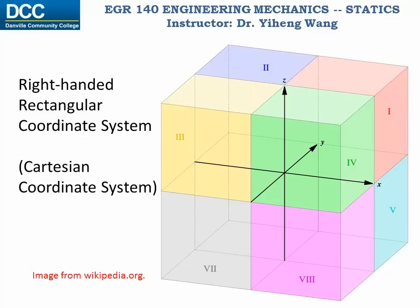is made of three number lines that are concurrent, meaning that they intercept each other at the origin, and also perpendicular to each other. These three number lines, known as the x, y, z axis, divide the space into eight octants, as demonstrated by the eight cubes with different colors in this image.